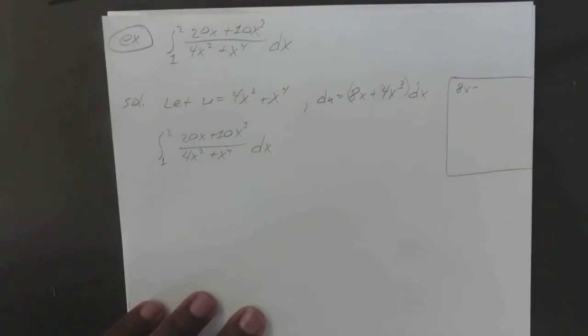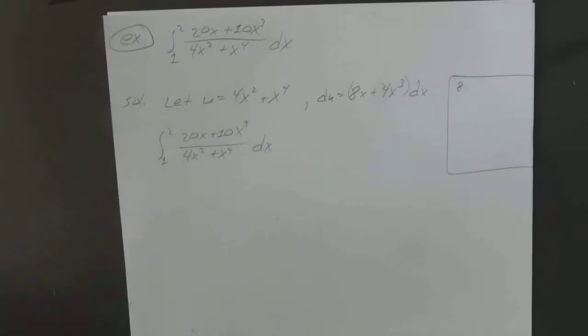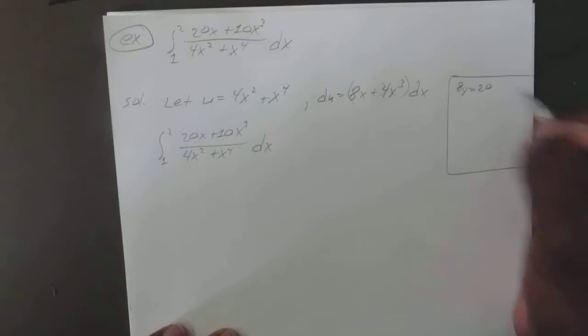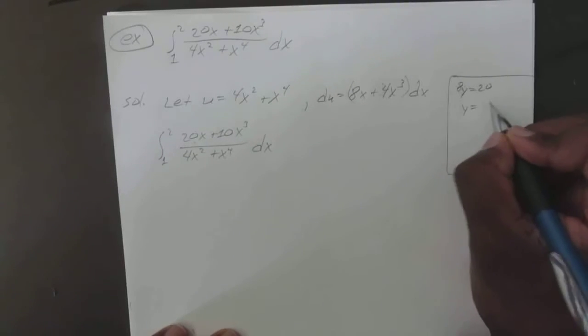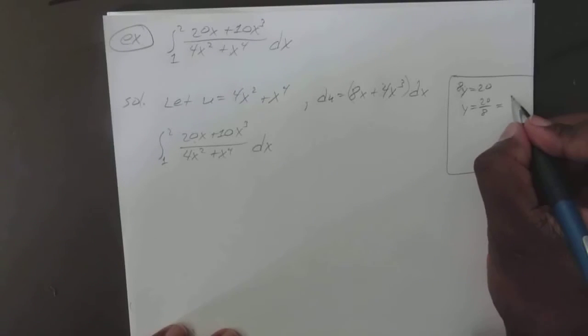So 8x, well you might as well say 8 times what value would give you 20. So if you divide both sides by 8, you have y equal 20 over 8, which is 5 over 2.